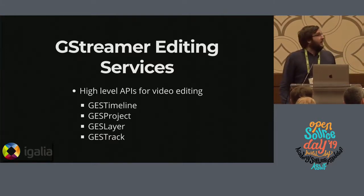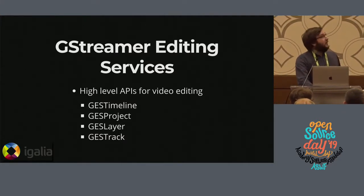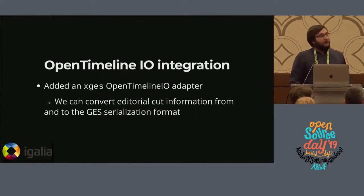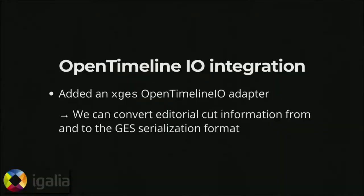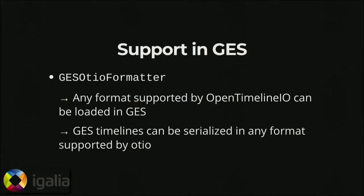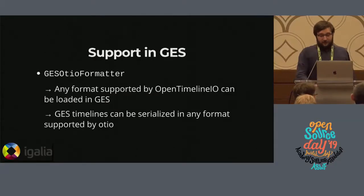What we thought would be very interesting is to integrate GStreamer and OpenTimelineIO. We started by implementing a GES adapter inside OpenTimelineIO, so that we could convert edit cuts from any software, in any supported format, to the GStreamer internal format — GES — and the other way as well, so that we are compatible with all formats supported by OpenTimelineIO. On top of that, we implemented native support inside the GStreamer Editing Services for the OpenTimelineIO format — a GES OTIO formatter — which means you can load any OTIO file inside GStreamer Editing Services and play back the timeline just as with the native GES format.